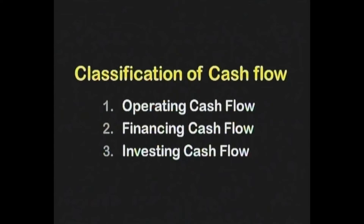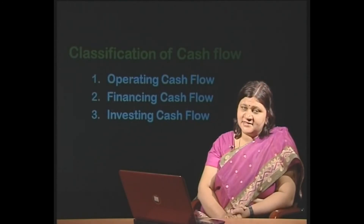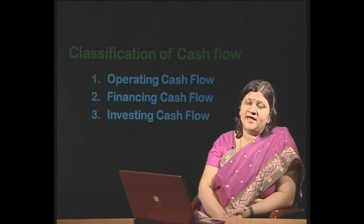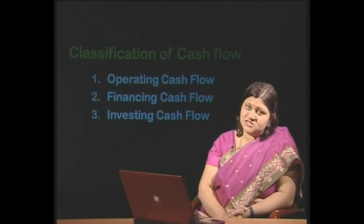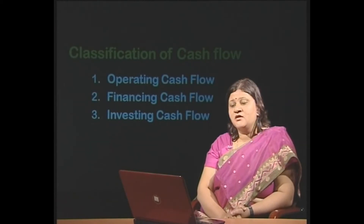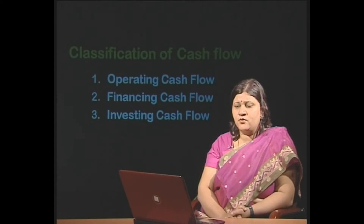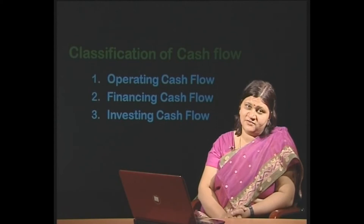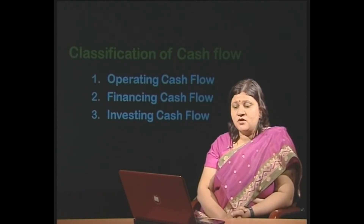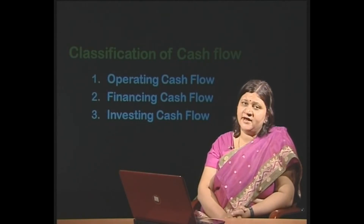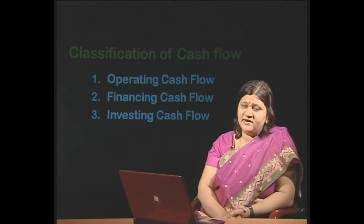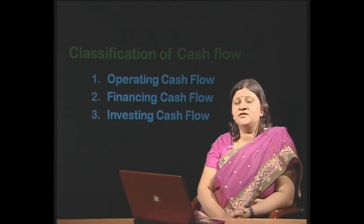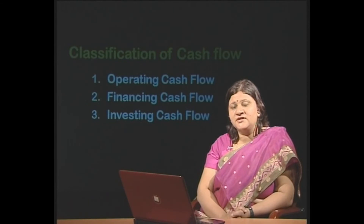The entire cash inflow or outflow in an organization will be classified and accumulated under the respective head, and the net amount of each of these items would be clubbed. We will get the final cash equivalents and add it to the opening balances so that we can get our closing cash equivalent. What do we mean by these three different types of cash flows — what shall constitute operating cash flow, how financing cash flows would be generated, and what shall come under investing cash flows — we will take them up one by one with examples.